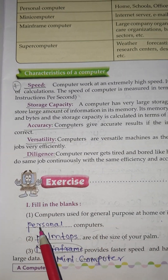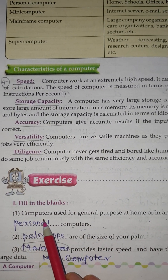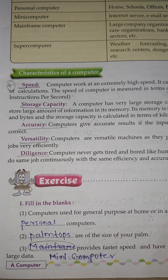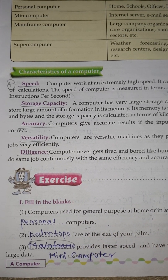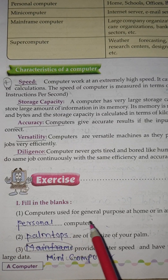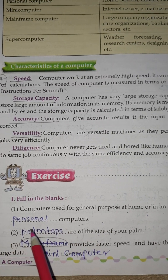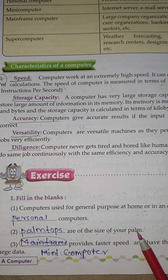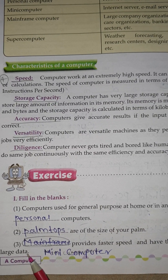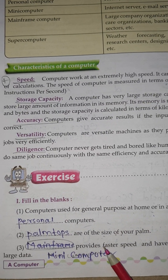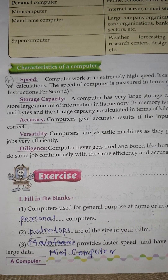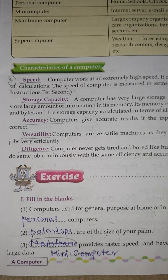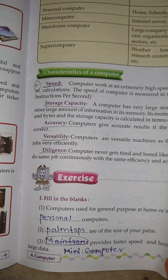Fill in the Blanks. Number 1: Computers used for general purpose at home and in an office are called Personal Computers. Number 2: Palm Tops are the size of your palm. Number 3: Mini Computer provides faster speed and has the ability to store large data.